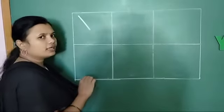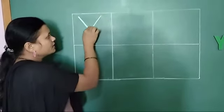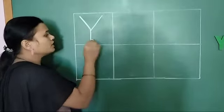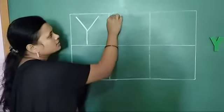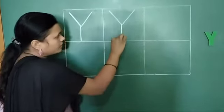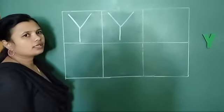First we are making slanting line. Then second slanting line. And here we are going to join one standing line. Slanting line, slanting line, and again one standing line. This is Y.